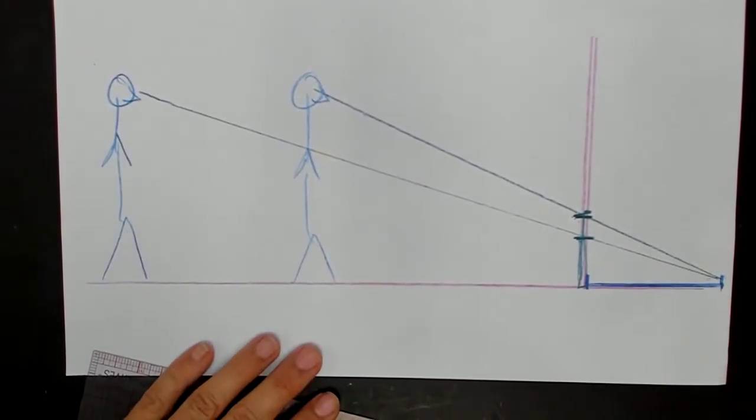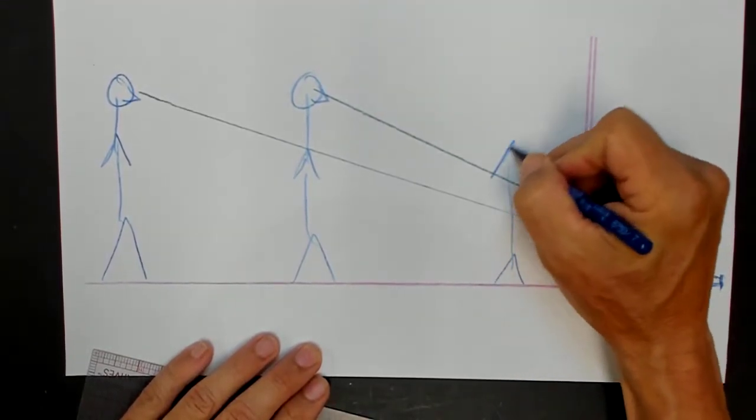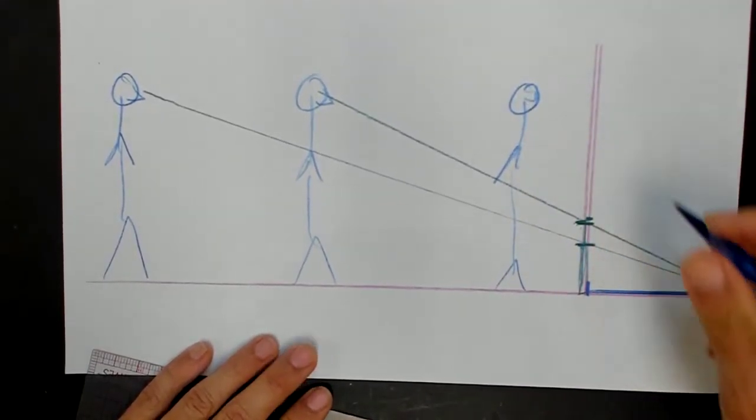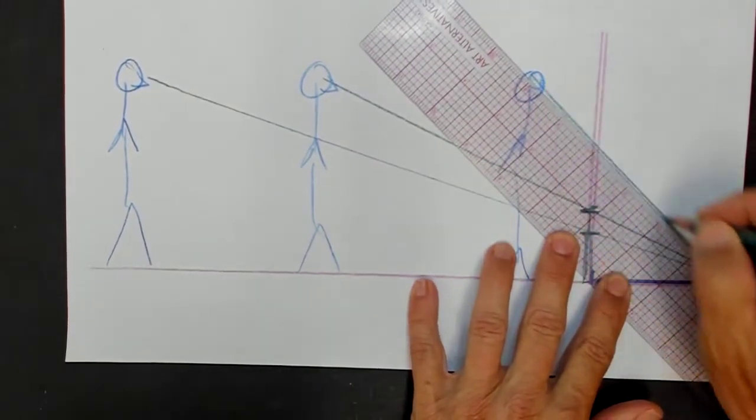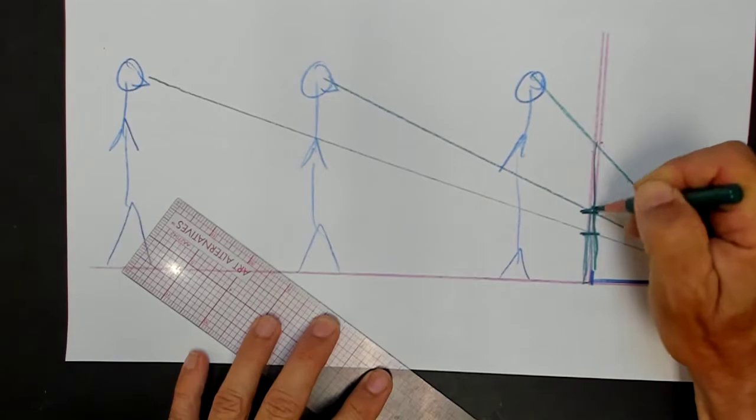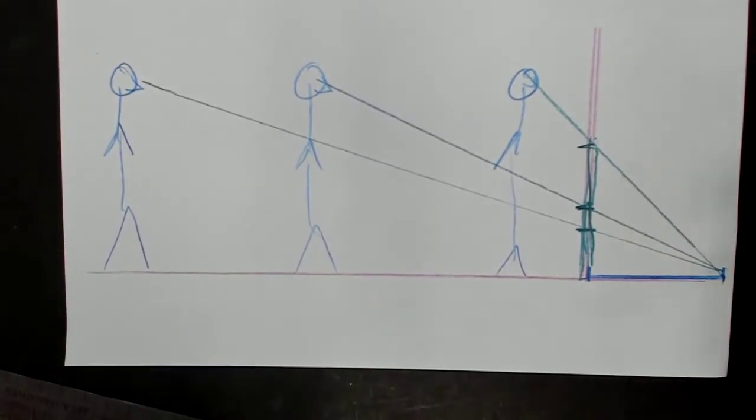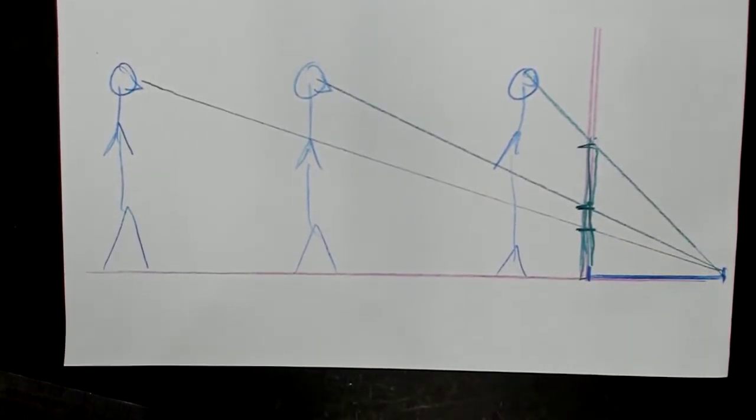And the closer this person gets to this picture plane, then the longer this thing will look. Now it's like way up here. So the shape is going to be something like this.